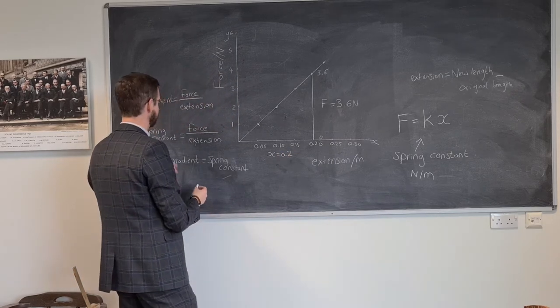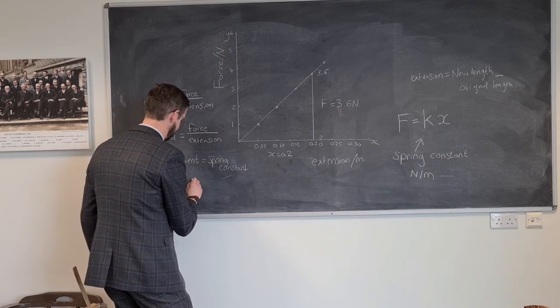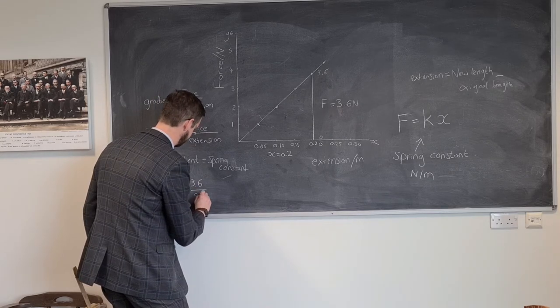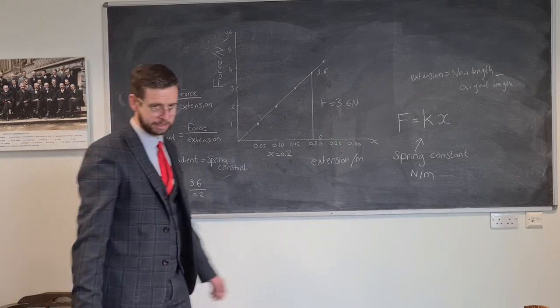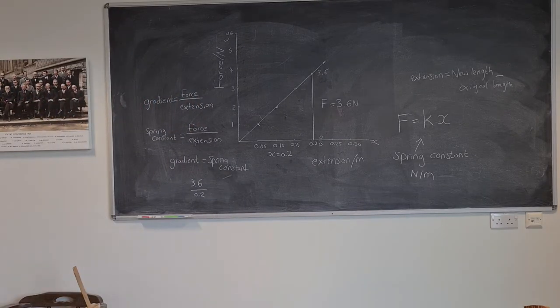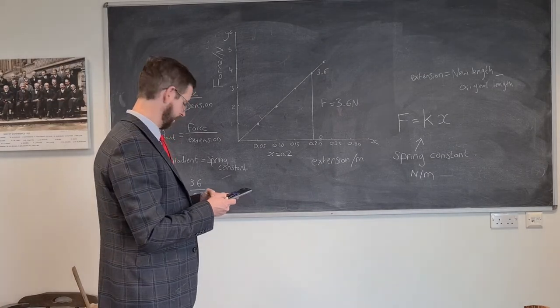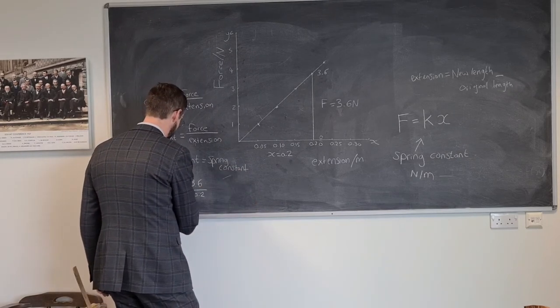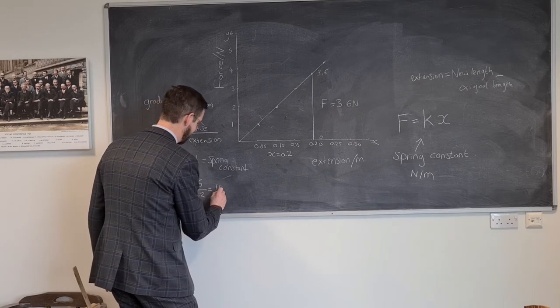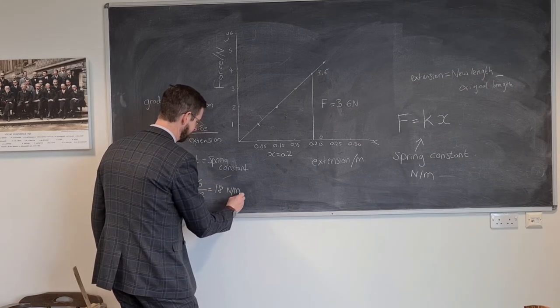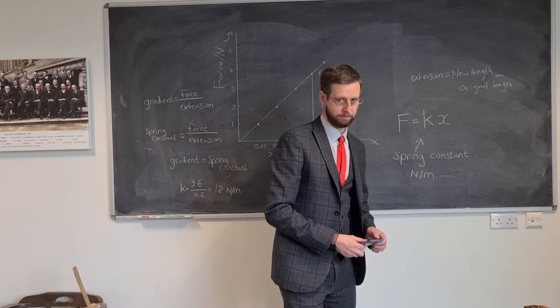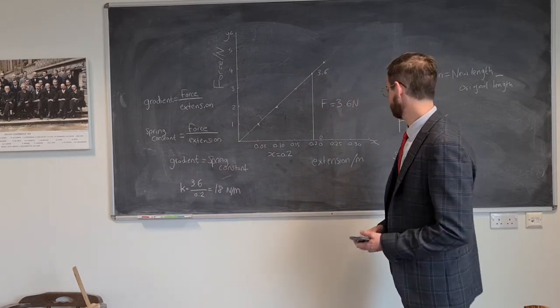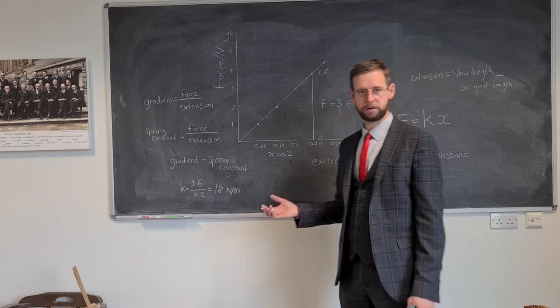So my gradient, which is the force divided by the extension, would be 3.6 divided by 0.2. And we would use a calculator. Find a calculator. 3.6 divided by 0.2, I said about 18. Who was 18? So k, the spring constant in this case, is equal to 18 newtons per meter. It means if I want to stretch this one meter, I've got to apply 18 newtons. There we go. And so that is what the spring constant actually is on this graph.